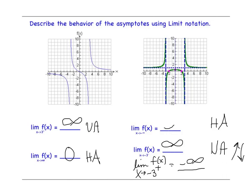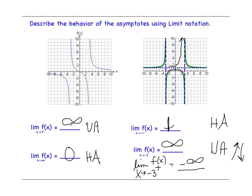What would it look like if the graph were going in the same direction? Say I had a graph where at one asymptote it's going to infinity on both sides — that would be infinity and infinity. At another asymptote it's going to negative infinity on both sides. That defines what's happening at the vertical asymptote. For the horizontal asymptote: as x moves to negative infinity, the graph is getting really close to y equals 1. And as x approaches infinity, f of x is also 1. Together these two limit equations describe the horizontal asymptote.